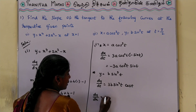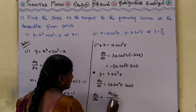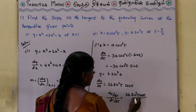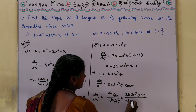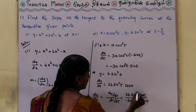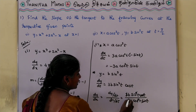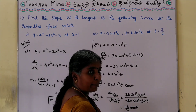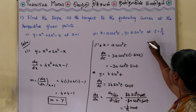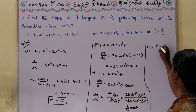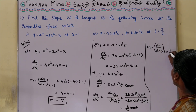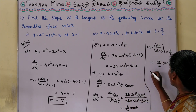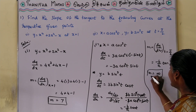Now, dy by dx equals dy by dt divided by dx by dt. That is 3b sin square t cos t divided by minus 3a cos square t sin t. Cancelling sin t, cos t, and 3 from numerator and denominator gives minus b by a times sin t by cos t, which equals minus b by a tan t. At t is equal to pi by 2, M equals minus b by a into tan(pi by 2), and tan(pi by 2) is infinity. Therefore, the slope of this curve is infinity. That is our required answer.